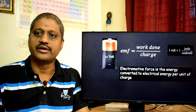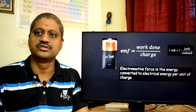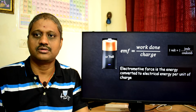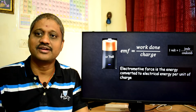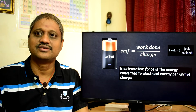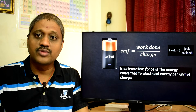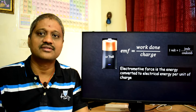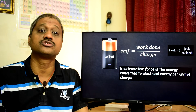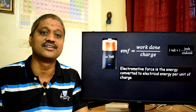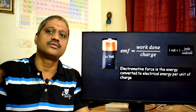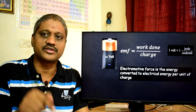Now we define what voltage — actually EMF — is. It is the work done per coulomb of positive charge, or the energy converted per coulomb of positive charge. That is called EMF. It is associated with the conversion. Electromotive force is the energy converted to electrical energy, and because of this conversion, there is creation of potential difference.